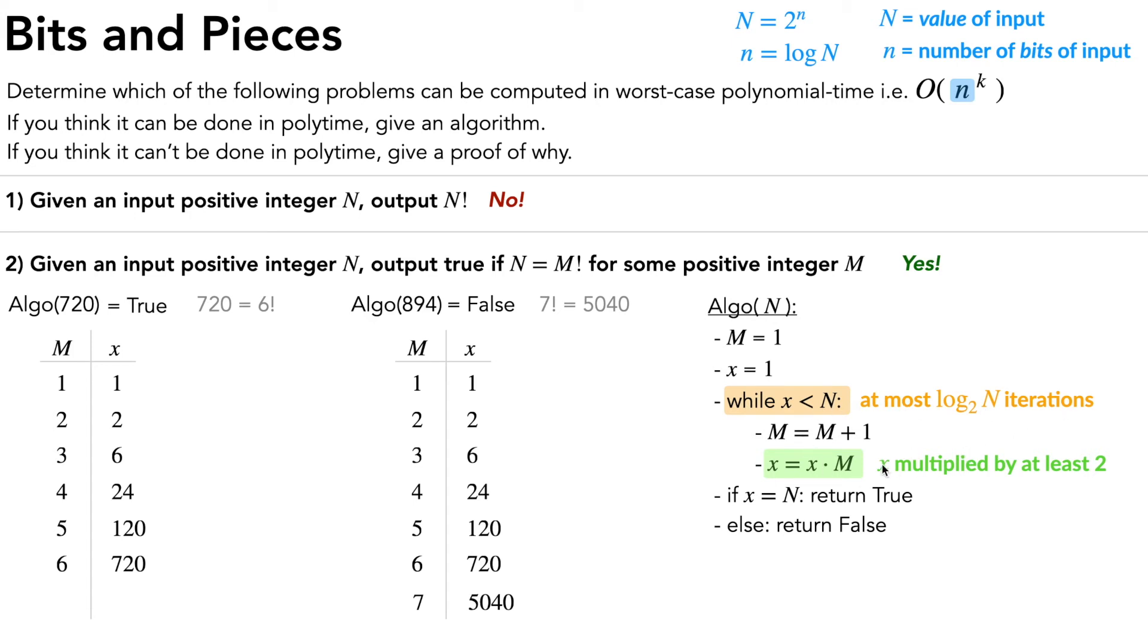Well, that would be at most log base 2 of big N iterations. This is actually a pretty crude bound because we're not just multiplying by 2. We're actually multiplying by a bigger and bigger and bigger number each time, which only gets us faster out of this loop. So this crude bound is actually still going to be okay for us, because remember, log of big N is just little n, so it turns out that this loop is within O of little n time.